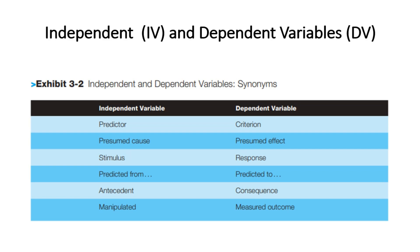In research, we call independent and dependent variables by different nicknames. For example, the independent variable is also known as predictor, presumed cause, stimulus, predicted from, antecedent, and manipulated. Whereas the dependent variables are known as criterion, presumed effect, response, predicted to, consequence, and measured outcome.